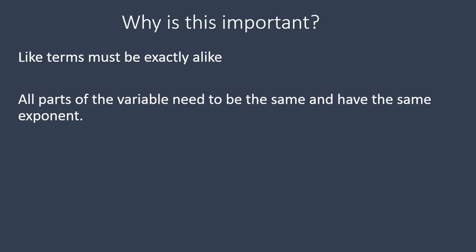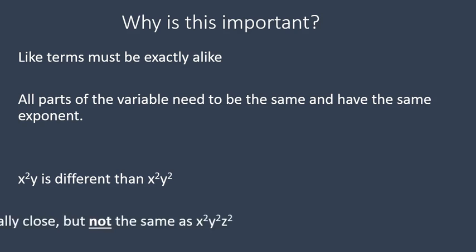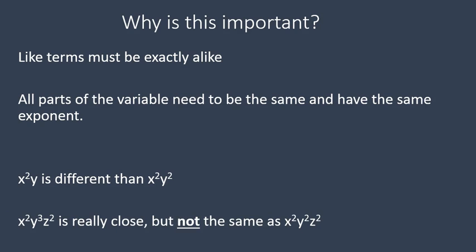And the reason why this is important is because when we start working with them we're going to be doing some different things with these variables and when we find ones that are exactly alike we can actually do some special and some cool things with them. So let's look at some that are similar but not quite exactly the same. x squared y is different than x squared y squared and x squared y to the power of 3 z squared is really close but not the same as x squared y squared z squared. Remember they have to be the same with the letters they have to be the same with the exponent. It's really important that we look carefully when we're looking at our exponents and make sure that they do look very similar. And by very similar I mean exactly the same.